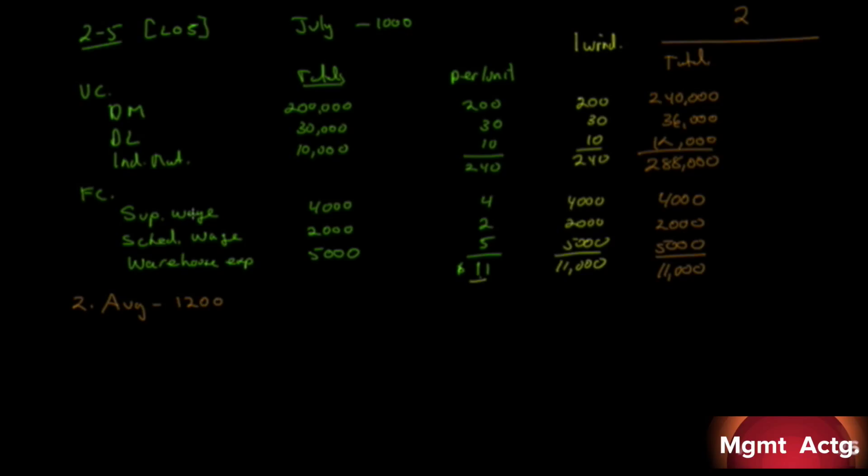Part B says calculate the per unit amounts for each of the variable and fixed cost items. This is total, this is per unit. We know the per unit is exactly this: 200, 30, and 10, totaling 240. But our per unit amount for fixed costs is going to change. The $4,000 is fixed, spread over 1,000 units is $4 per unit. But now we're going to spread it over 1,200 units, so the cost per unit is now $3.33. This will drop to $1.67, and this will drop to $4.17 for a total of $9.17.